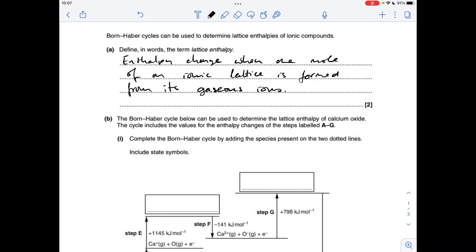So part A, definition of the term lattice enthalpy, is the enthalpy change when one mole of an ionic lattice is formed from its gaseous ions.